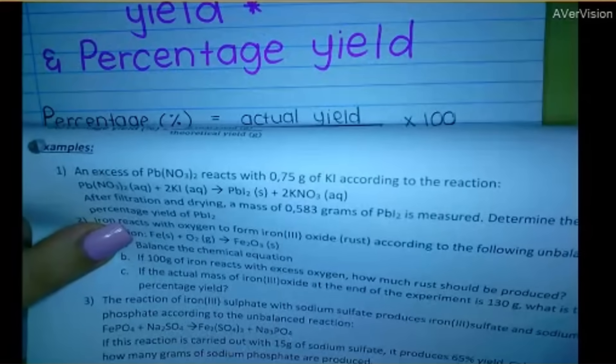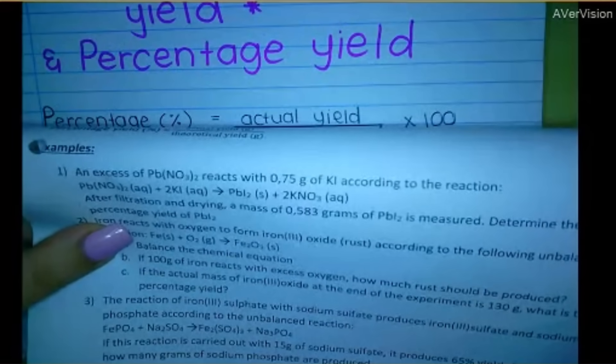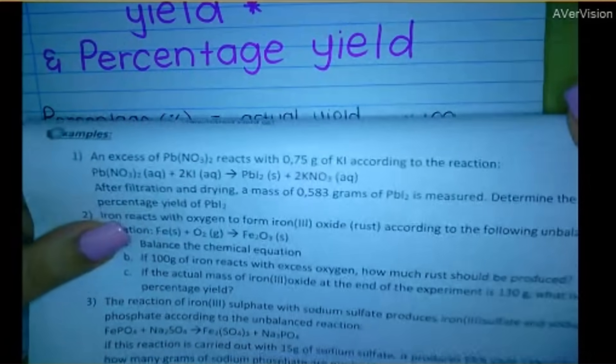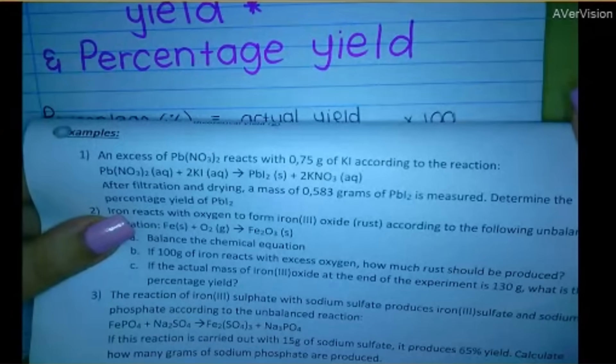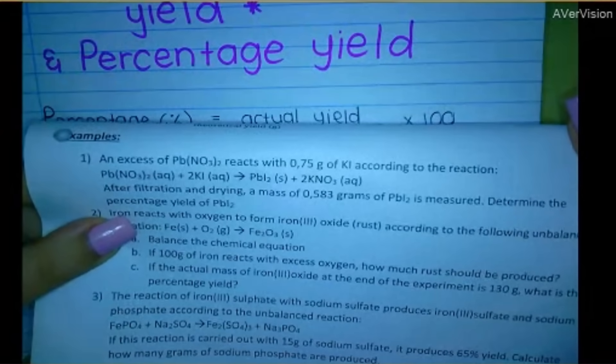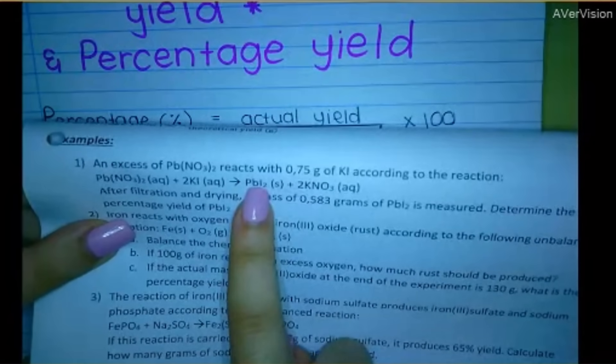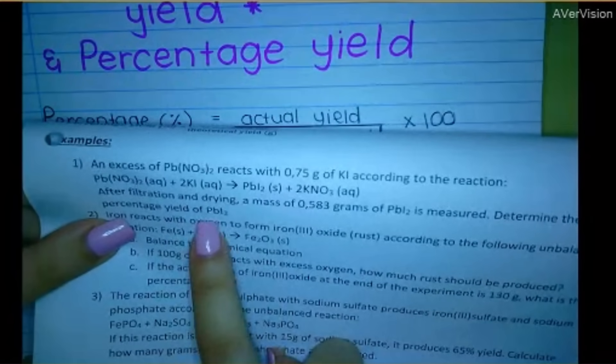Always check if the reaction is balanced, because if it's not, stoichiometry won't work until you balance it. After filtration and drying, a mass of 0.583 grams of lead iodide is measured. So this one. Determine the percentage yield.